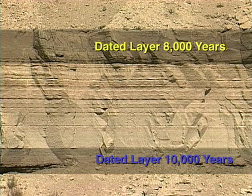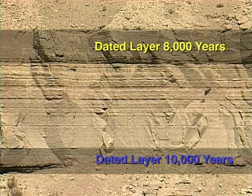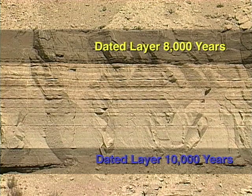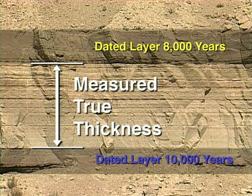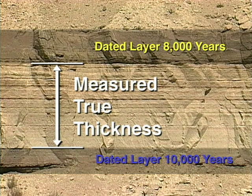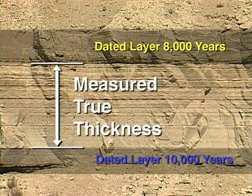Geologists can also determine how fast sediments were accumulating in a sequence. With two dated layers and a measured true thickness between, it is an easy calculation to determine the sedimentation rate. This rate is an indicator of how fast faults are moving, how fast mountains are being uplifted, and how rapidly basins sink. The geologist can now talk not just about events, but event rates.